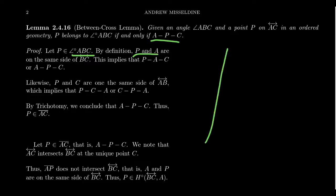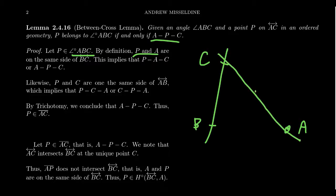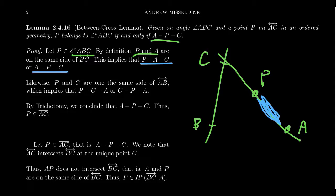Let's unravel that a bit. We know that P and A are on the same side of line BC — so we have C, B, and A maybe over here, with P somewhere. By assumption, P is on line AC. So the line segment PA doesn't intersect line BC. Looking at the line, by trichotomy there are only a couple of options: either A is between P and C, or P is between A and C.